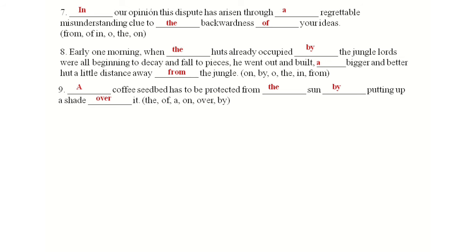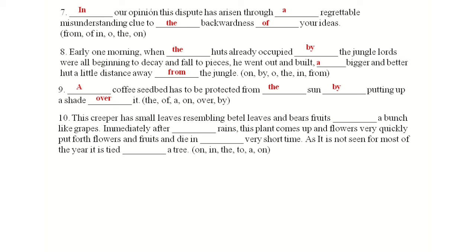Tenth one: This creeper has small leaves resembling betel leaves and bears fruits in a bunch like grapes. Immediately after dash rains, this plant comes up and flowers very quickly, puts forth flowers and fruits and dies in a very short time. As it is not seen for most of the year, it is tied dash a tree. The answers: bears fruits in a bunch like grapes, immediately after the rains, and it is tied to a tree.